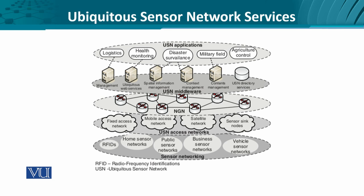Then we have the access network, which is any broadband technology providing connectivity between the service provider and the NGN. Following the NGN architecture, on the user side we have the middleware — the information architecture comprising management services, location management services, context services, and directory services. These middleware services ensure that only filtered, relevant information is passed to the end user, without flooding it with unnecessary data.